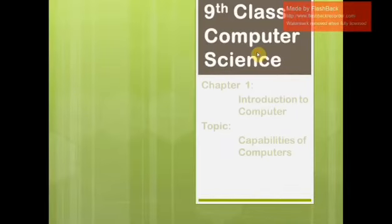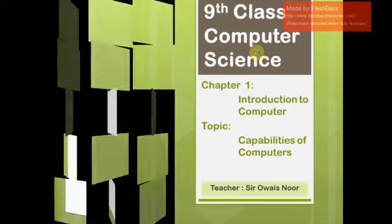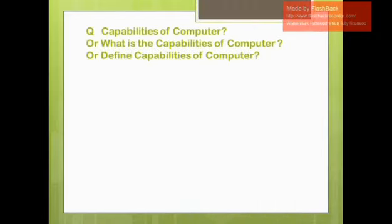We are going to go ahead with our video. 9th class computer science, first chapter: Introduction to Computer. The topic here is capabilities of computer. This is what you are going to learn today. The question is: what are the capabilities of a computer, or define capabilities of computer. This is how it appears in the paper, but the answer is only one.